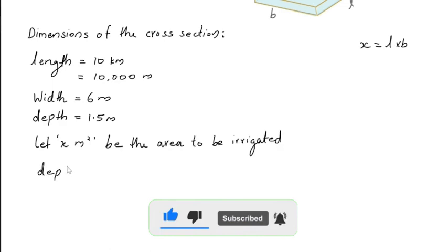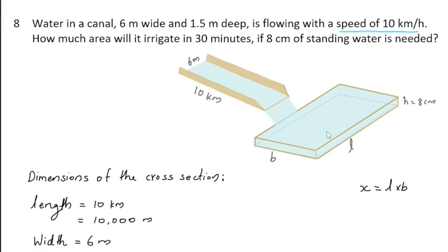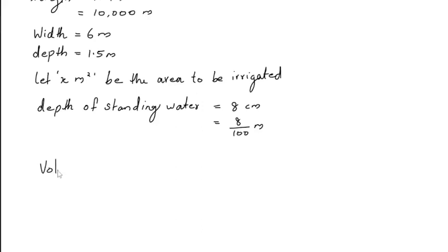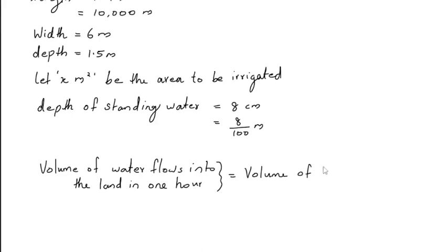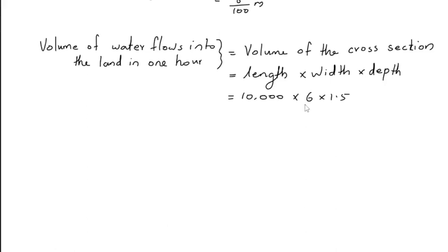The depth of standing water is 8 centimeters, that is 8 divided by 100 meters. The volume of this cross-section will give the volume of the water that flows into the land in one hour, that is in 60 minutes. The land is irrigated for 30 minutes, so the volume of water that flows into the land in 30 minutes is equal to the following calculation.